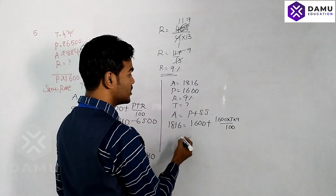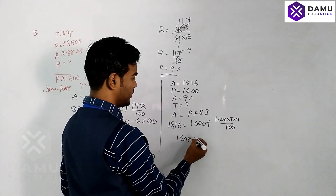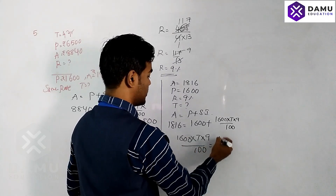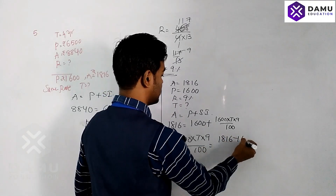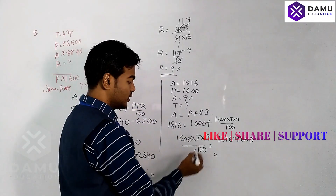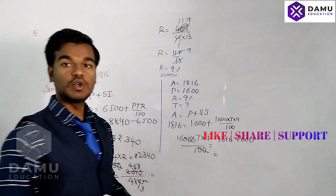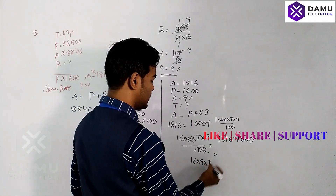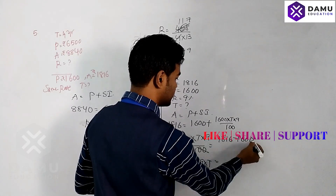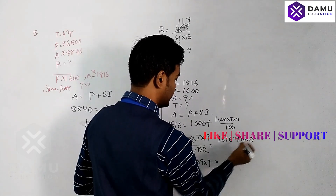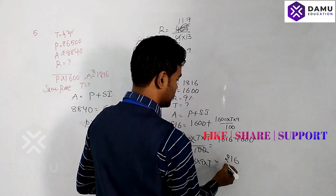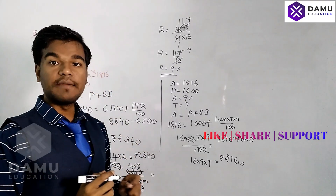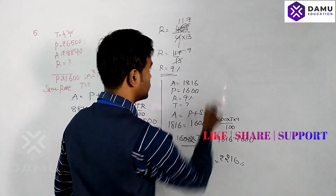One thousand six hundred into T into nine by hundred equals one thousand eight hundred sixteen minus one thousand six hundred. The two zeros cancel on the left side, giving sixteen into nine into T equals two hundred sixteen rupees. So just take T will be...